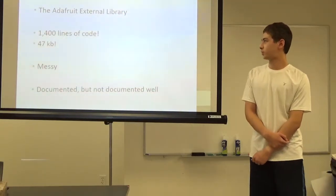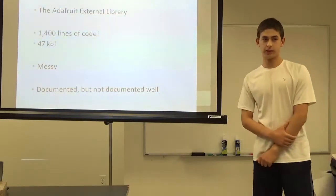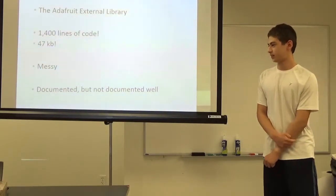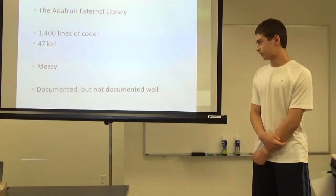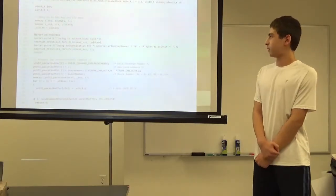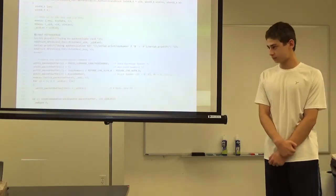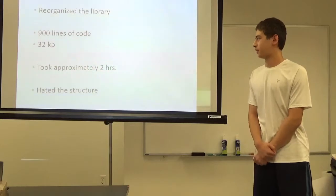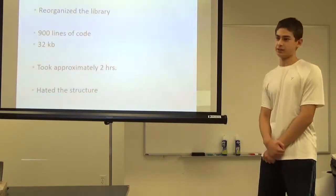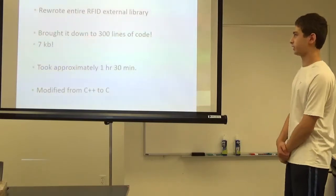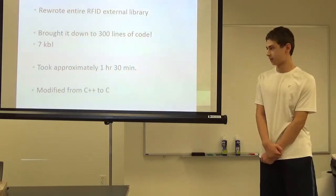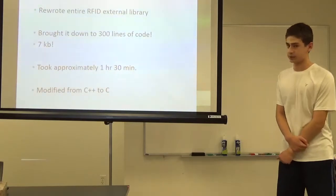First we'll start with the external library that Adafruit developers wrote. It was made specifically designed to work with their board. It was 1,400 lines of code and 47 kilobytes. Very messy, disorganized. I didn't like using it. It wasn't too well documented, so I decided to change that. This is an example of part of the code for authentication. I reorganized their library. I brought it down to 900 lines of code and 32 kilobytes. Took me about two hours to do it, but I still hated the structure of the whole code. I ended up rewriting the entire library. Brought it down to 300 lines of code. Only seven kilobytes. Took me about an hour and a half. And I also changed the language from C++ to C.